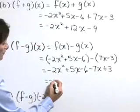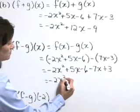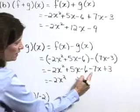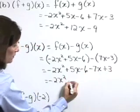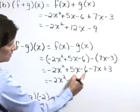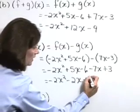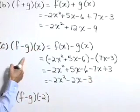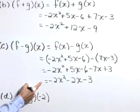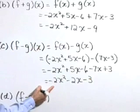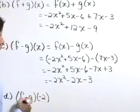Combine your like terms. Out in front, negative 2x squared. Positive 5x and negative 7x is negative 2x. Negative 6 and positive 3 is negative 3. So f minus g of x is equal to negative 2x squared minus 2x minus 3.